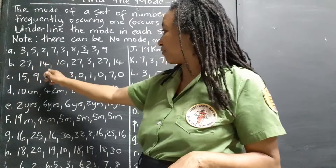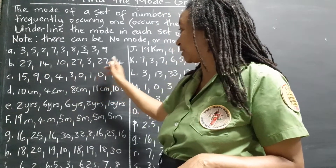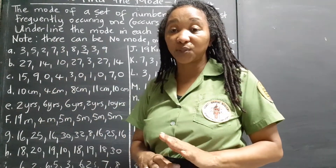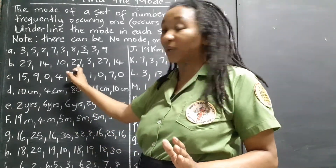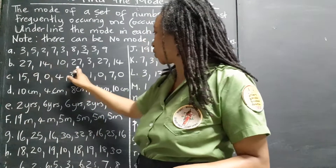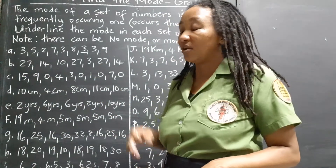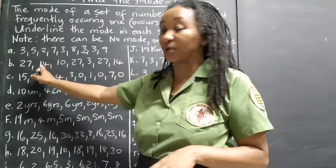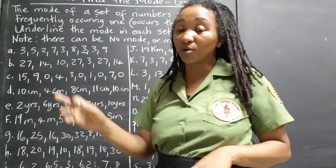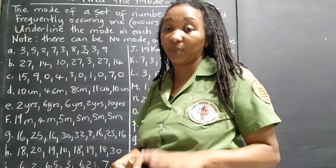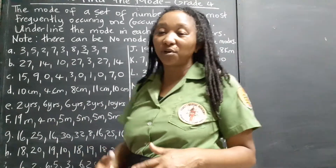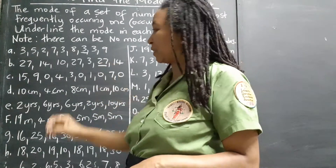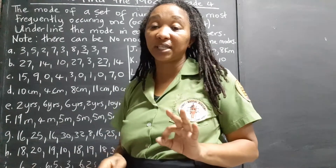Set B: 27, 14, 10, 27, 3, 27, 14. Which number is the most frequent? There are three 27s. The 14 is trying to compete, but there are only two 14s. We would need one more 14 to tie with the 27. So even though 14 appears twice, 27 is the mode because it appears three times.